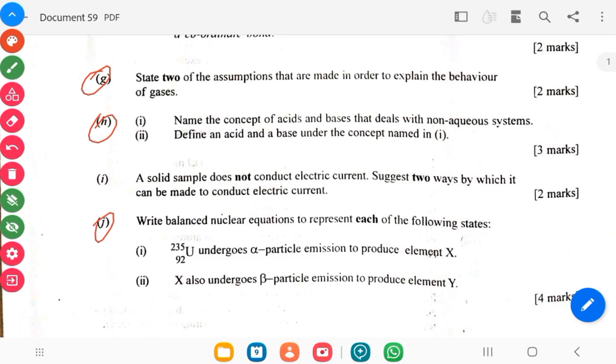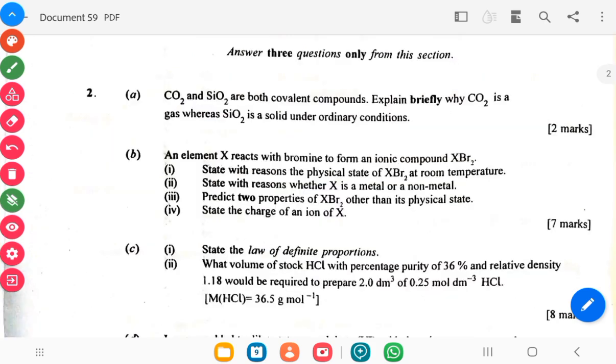The ice is a solid sample that does not conduct electric current. State two ways by which it can be made to conduct electric current. Carbon dioxide and then SiO2 are both covalent bonds. Explain why carbon dioxide is a gas while SiO2 is a solid under ordinary conditions.